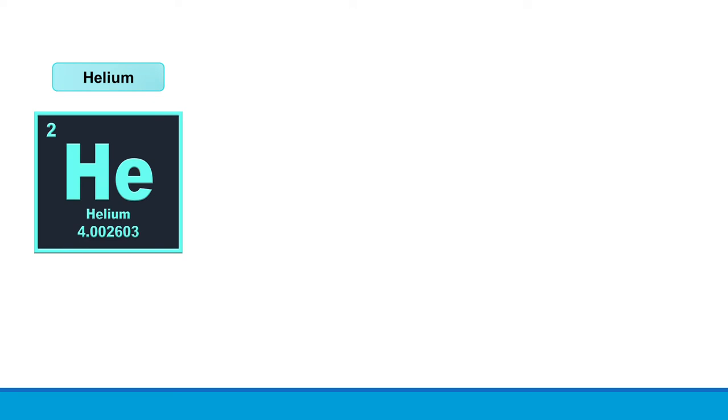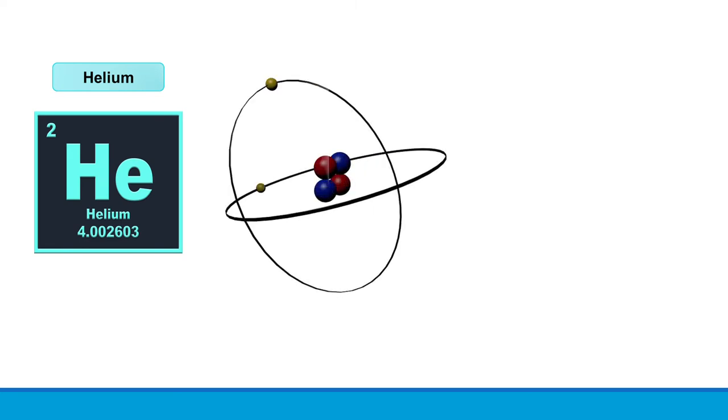Helium is the second element in periodic table with the mass number of four. Atomic structure of helium shows helium has two protons, two neutrons and two electrons.